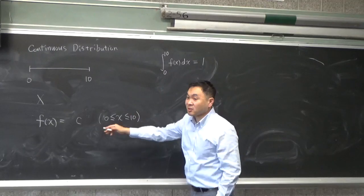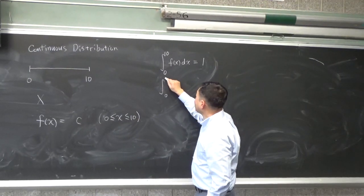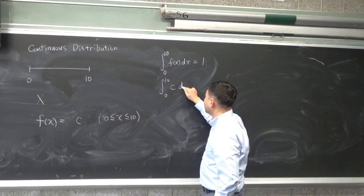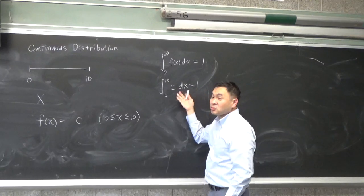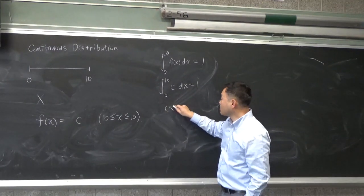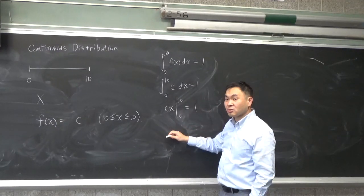And then because f(x) is just a constant, you have 0 to 10 of constant c dx equals to 1. Well, then we can just do the regular integral. What's the integral of c? cx. And you plug in 10 and 0.